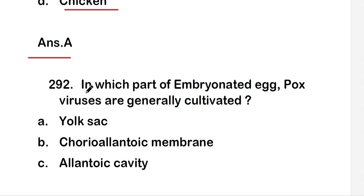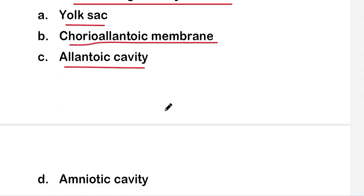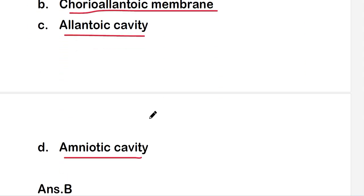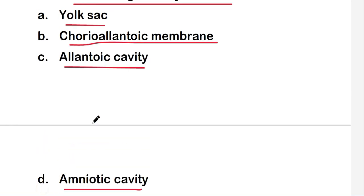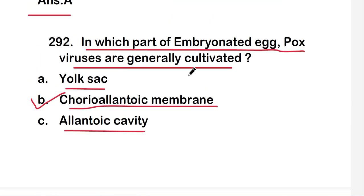Next question: in which part of the embryonated egg are pox viruses generally cultivated? Options are yolk sac, chorioallantoic membrane, allantoic cavity, or amniotic cavity. The right answer is option B, chorioallantoic membrane. Pox viruses are generally cultivated in the chorioallantoic membrane of embryonated eggs.